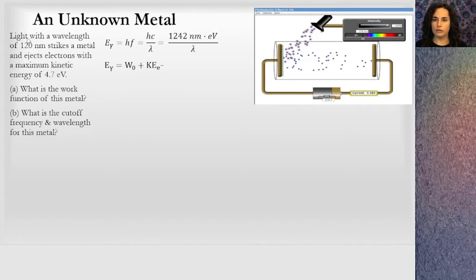Let's do an example to practice this. I have an unknown metal. Light with a wavelength 120 nanometers strikes a metal and ejects electrons with a maximum kinetic energy of 4.7 EVs. What is the work function of this metal? We're solving for w-naught. We're given the wavelength of the photon coming in. The energy of that photon goes into overcoming the work function and giving that electron kinetic energy. If I'm solving for the work function, I'm going to take the energy of the incoming photon and subtract off the kinetic energy of that electron.